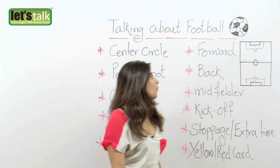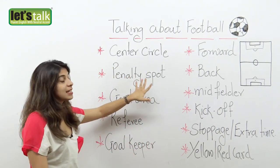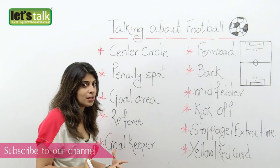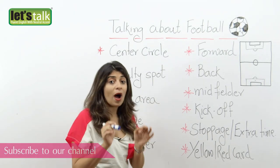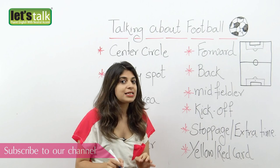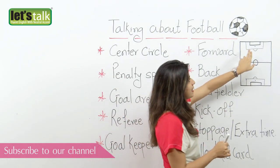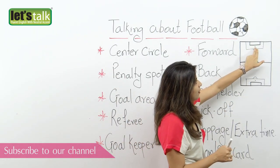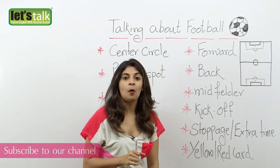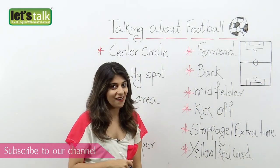Next we have penalty spot. What is a penalty spot? It is a white marking from where penalty kicks are taken. These are the penalty spots, also called penalty marks.